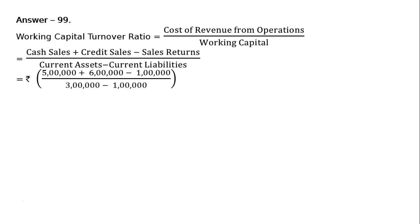That is equal to rupees 5 lakh (cash sales) plus credit sales rupees 6 lakhs minus sales returns rupees 1 lakh, divided by current assets rupees 3 lakhs minus current liabilities rupees 1 lakh. That is equal to rupees 10 lakhs upon rupees 2 lakhs, that is equal to 5 times. This is the final answer.